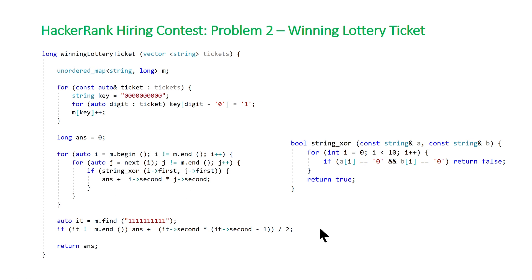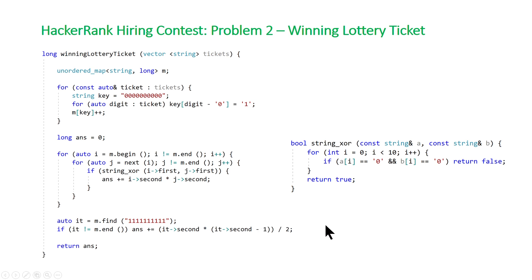The last piece of code handles the case where a ticket already contains all digits on its own, combined with the remaining tickets. It's similar to the handshake problem — if you have n people, the number of handshakes is n times (n minus 1) divided by 2. That's exactly what you see here: value times (value minus 1) divided by 2, which is added to our answer before returning.